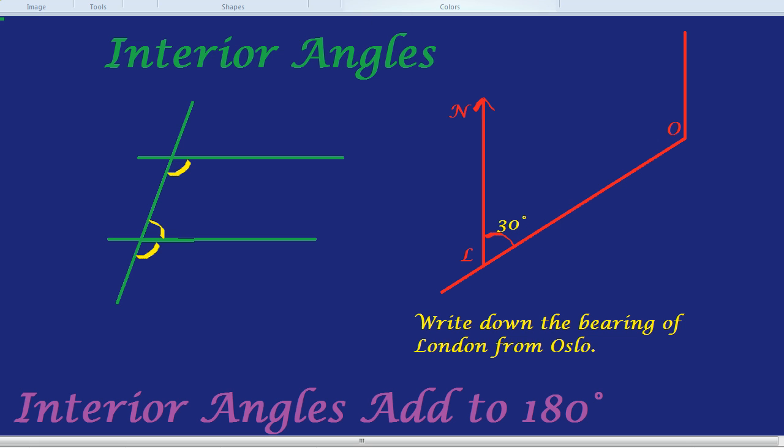Well, if you've somewhat forgotten bearings, this is what you do. You start off at the place where they say from. It says from Oslo, so we're going to start at Oslo. We then look north, and here's our north line. We then measure clockwise until we reach the road towards the place we're looking for. We're looking for London, and there we've reached the road going to London. In other words, we need to know this angle.